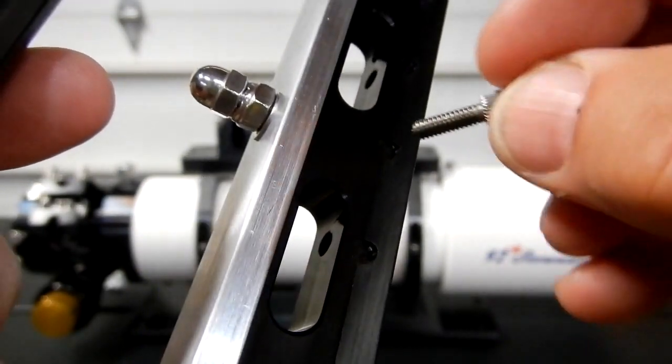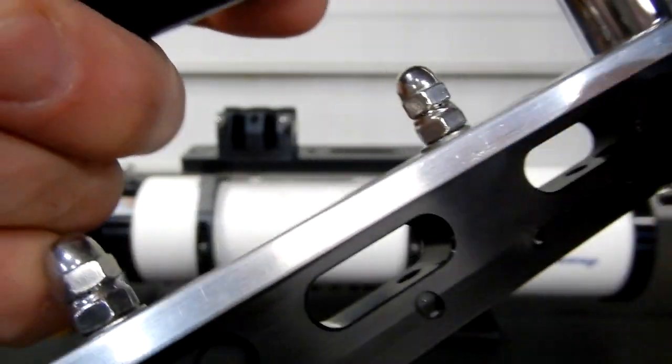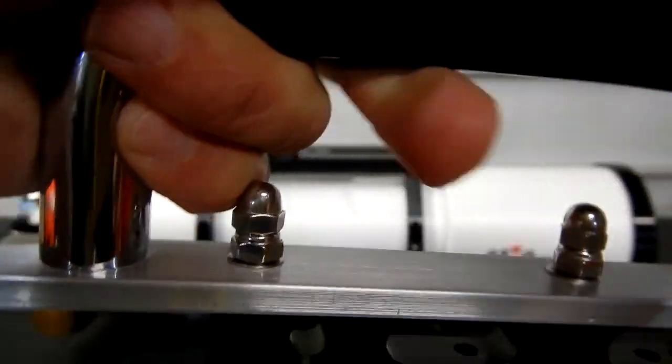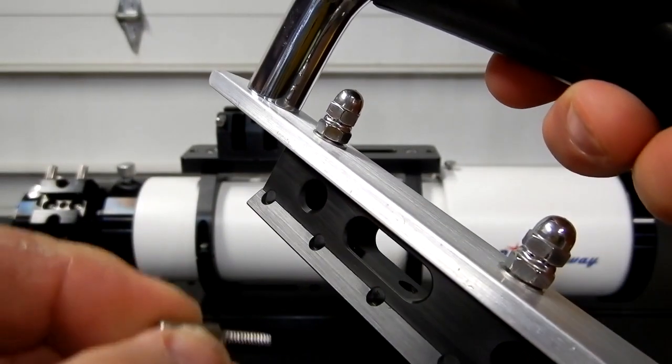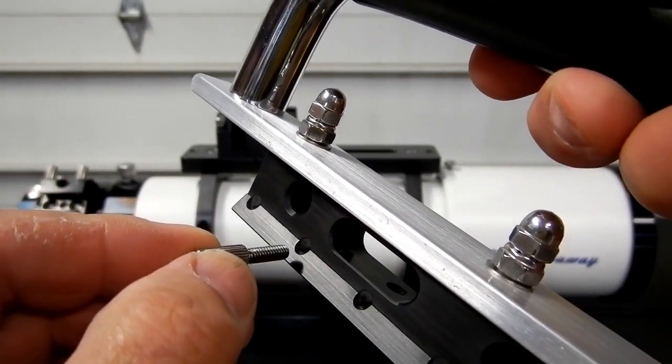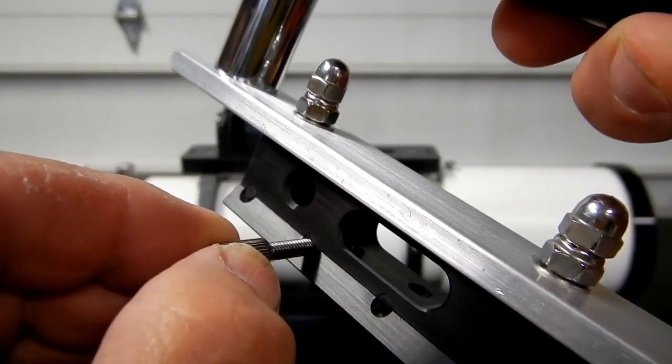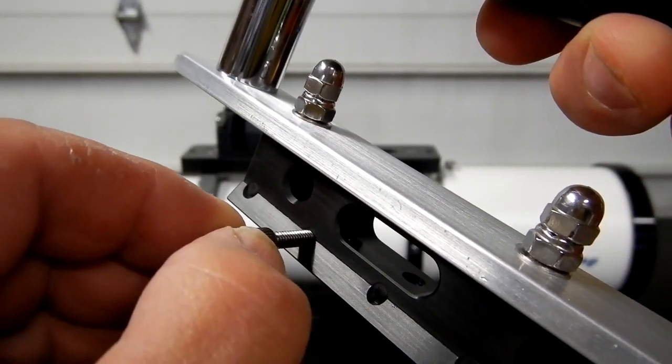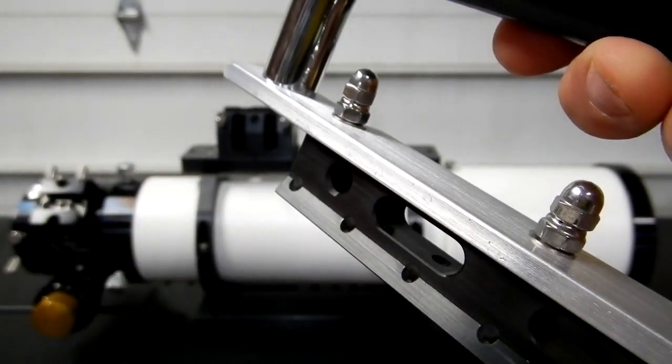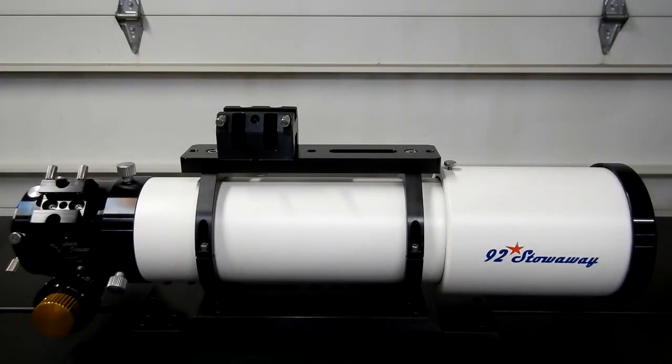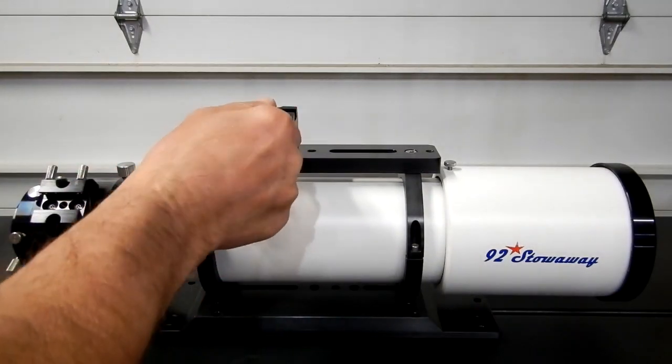Plus once that set screw is into that spot face it cannot slide. You have no possibility of it sliding on you. It locks it in place. Here's your thumb screw and you can see how it seats in there. As you tighten it down it actually sets right in there. That's why I added a third one just for the heck of it. I wanted to make sure that I just had that little extra bit of clamping.